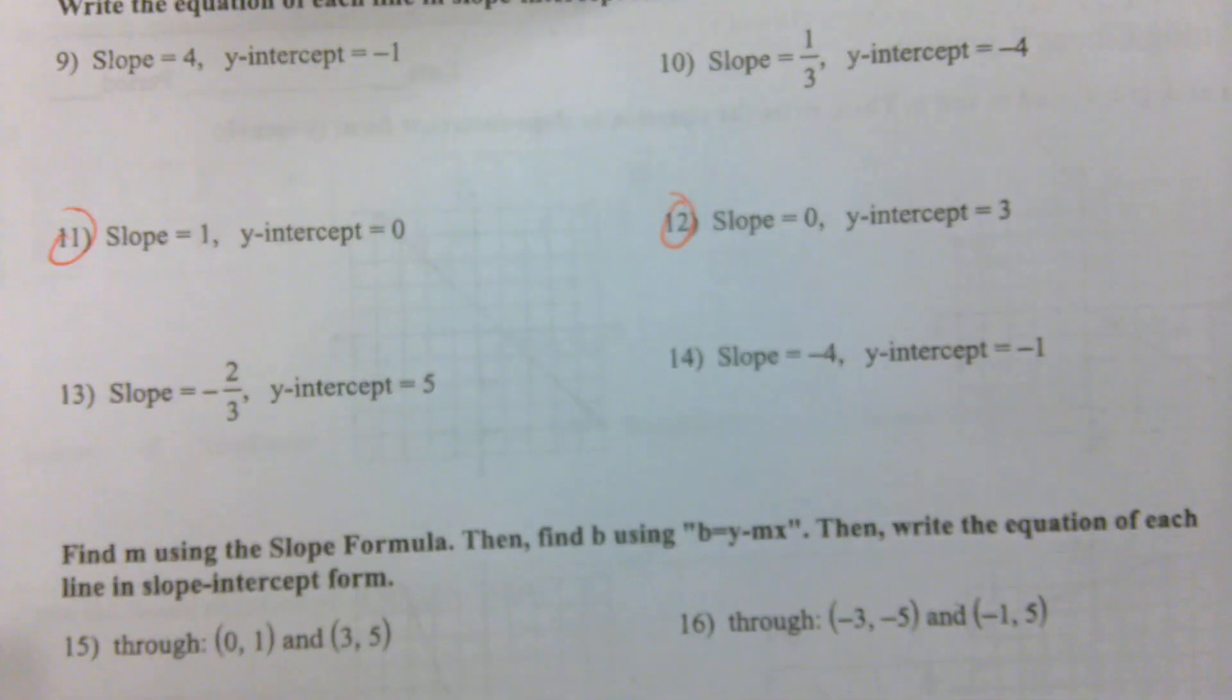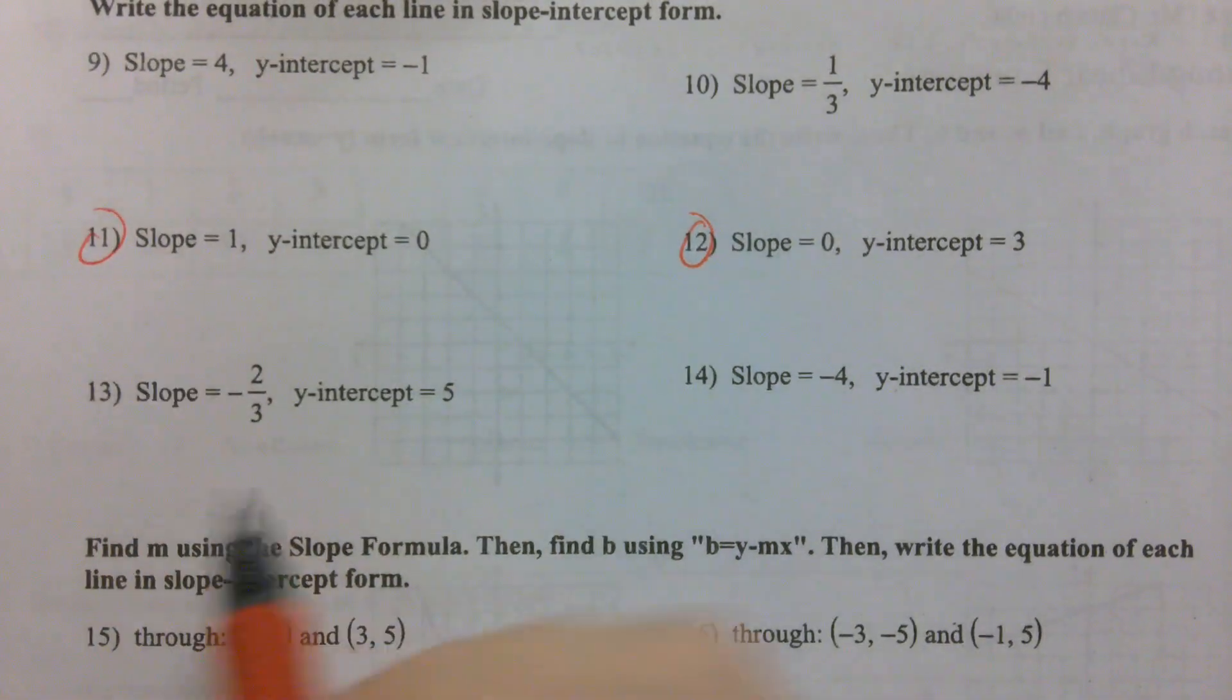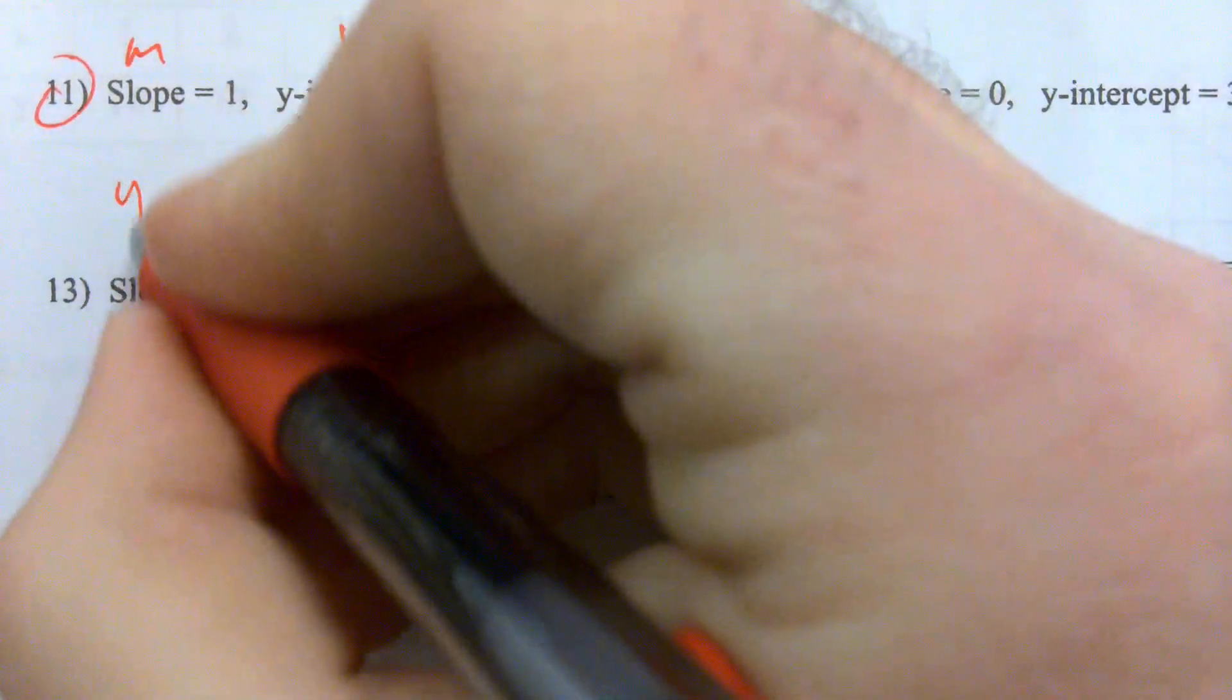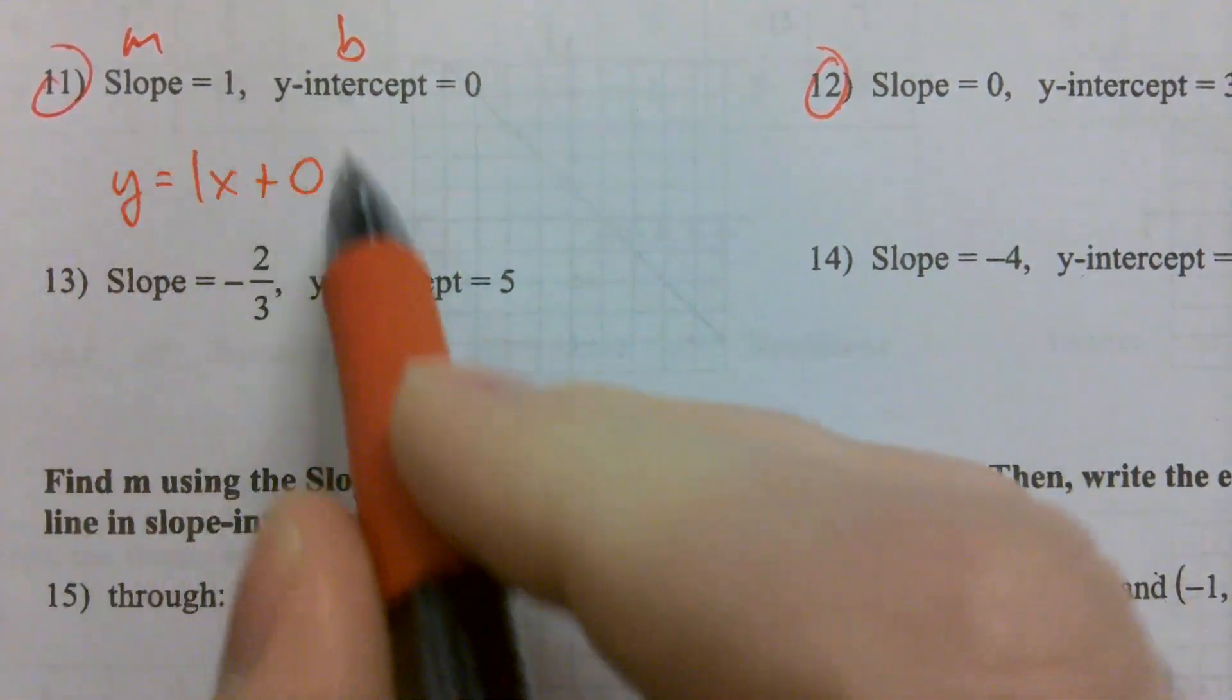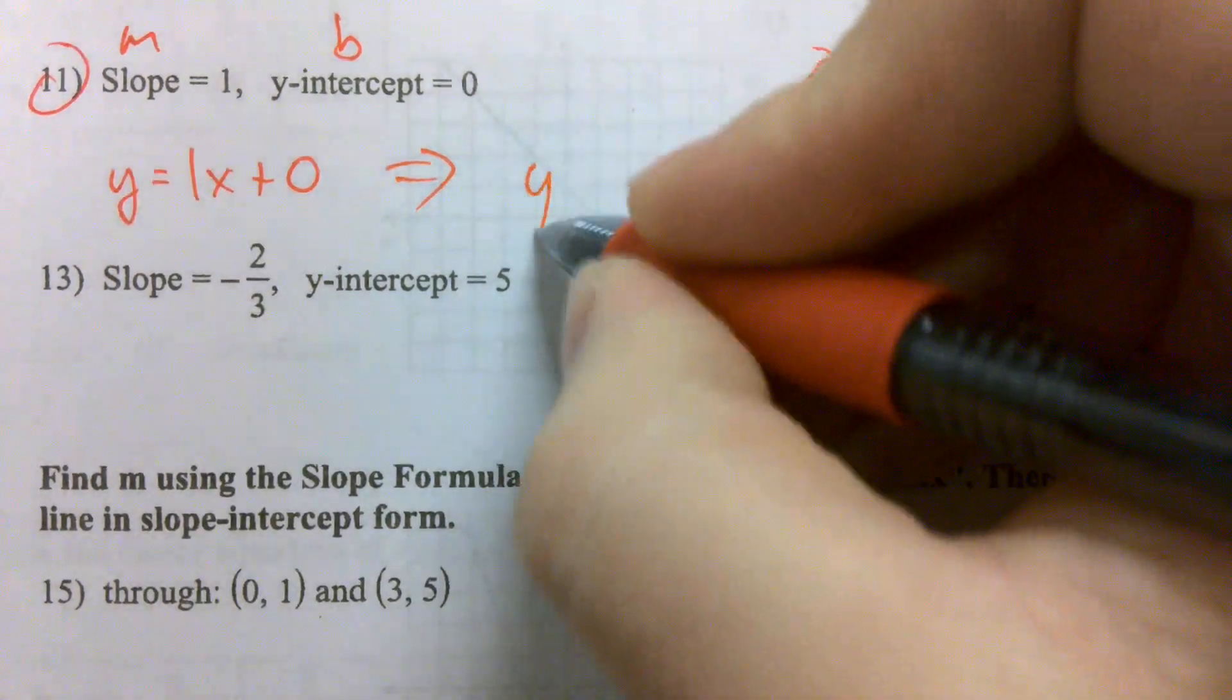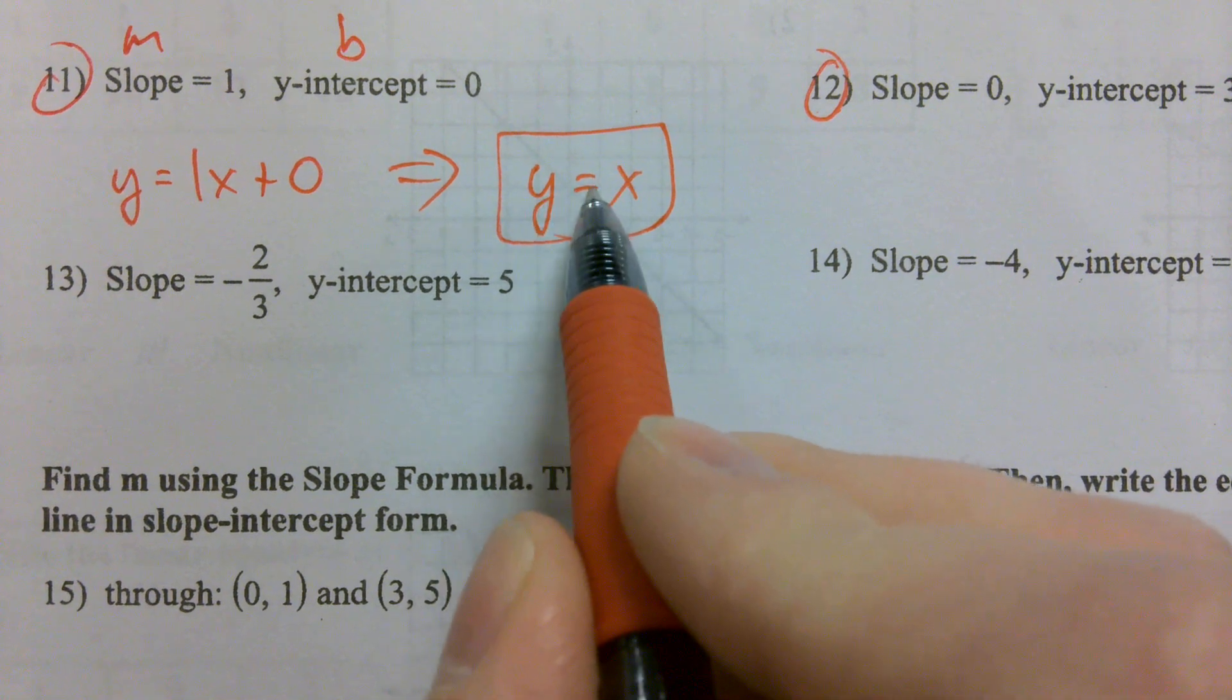Writing equations on the back. This is probably the easiest way for us to write equations because we're given the M, we're given the B. We know that slope is M, y-intercept is B. So for number 11, we plug in the M, we plug in the B. Y is equal to 1x plus 0. How can we write this a lot cleaner? 1x, we don't even need the 1, right? Y equals X. We don't need that 1 in front, we don't need that plus 0 on the end. All we need to write is Y equals X.